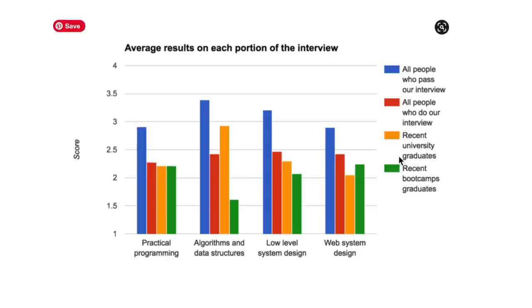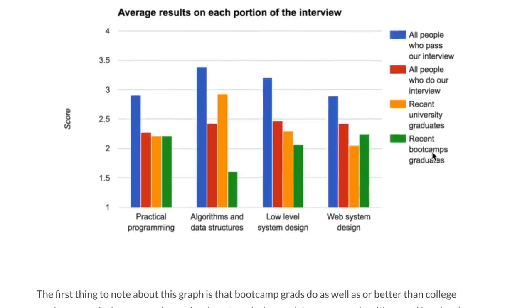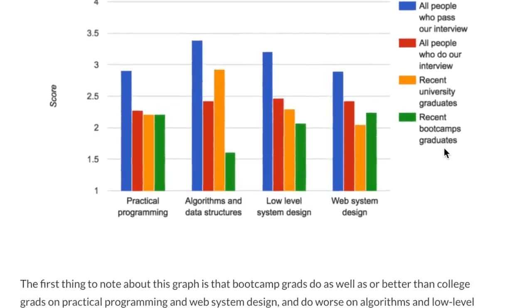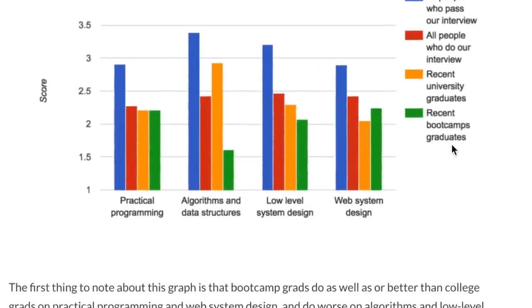There is a study in 2016 by TripleByte that found that during the interview process, people from untraditional backgrounds, specifically bootcamps, had data structures and algorithms as their biggest weakness. Because folks from non-traditional backgrounds usually don't get access to data structures classes, it makes it difficult to do well in interviews. So while you're making your transition, I would highly recommend taking a data structures and algorithms class and really learning the topics.